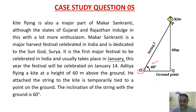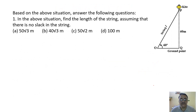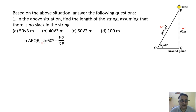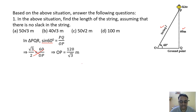Question 1: Find the length of the string. Opposite side PQ = 60m is given; we use sin 60° = PQ/OP: √3/2 = 60/OP. Cross multiplying gives OP = 120/√3 = 40√3. The correct option is option B.